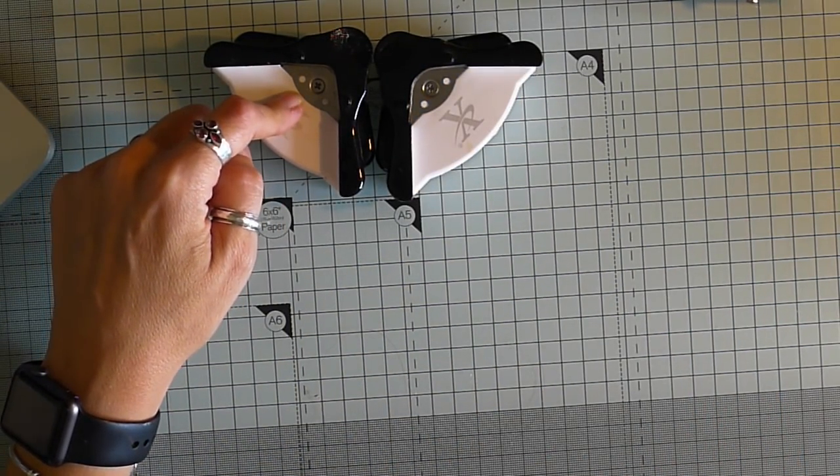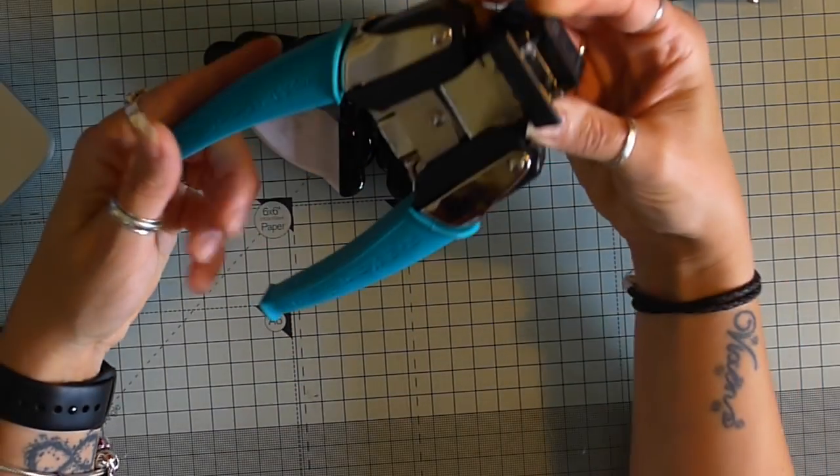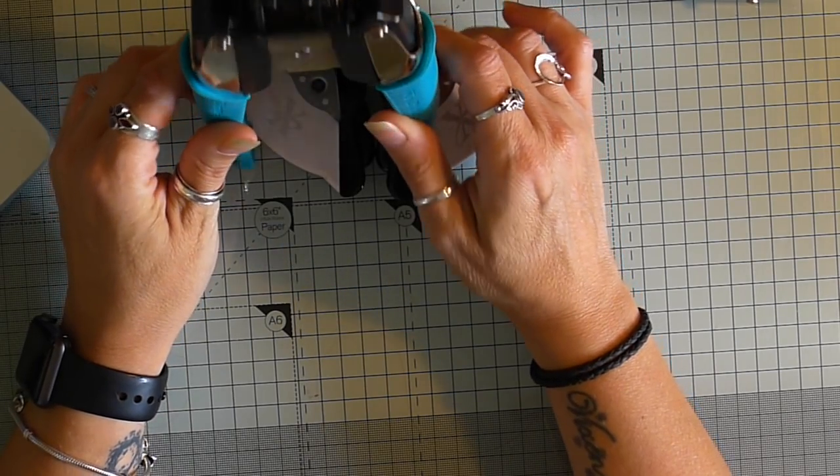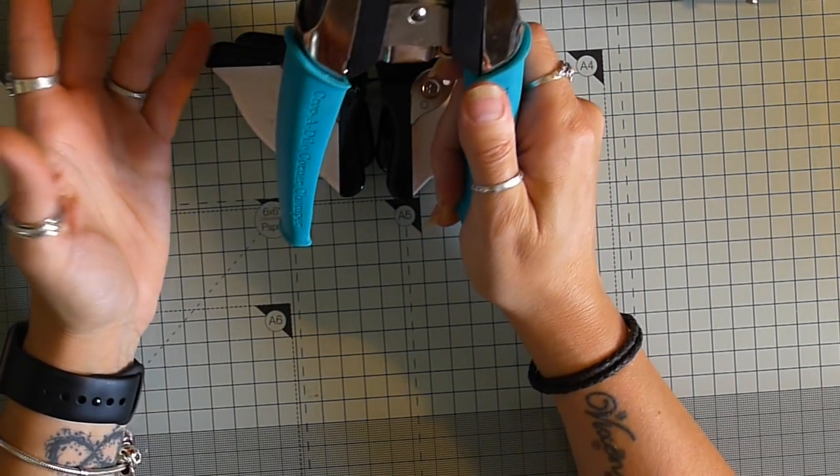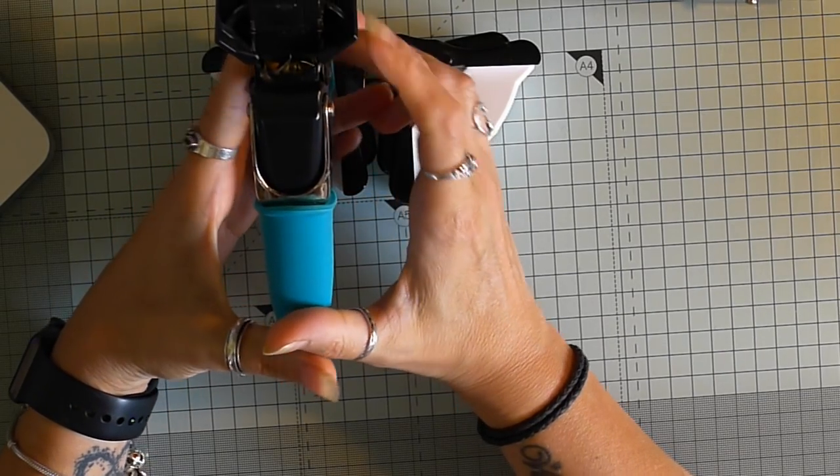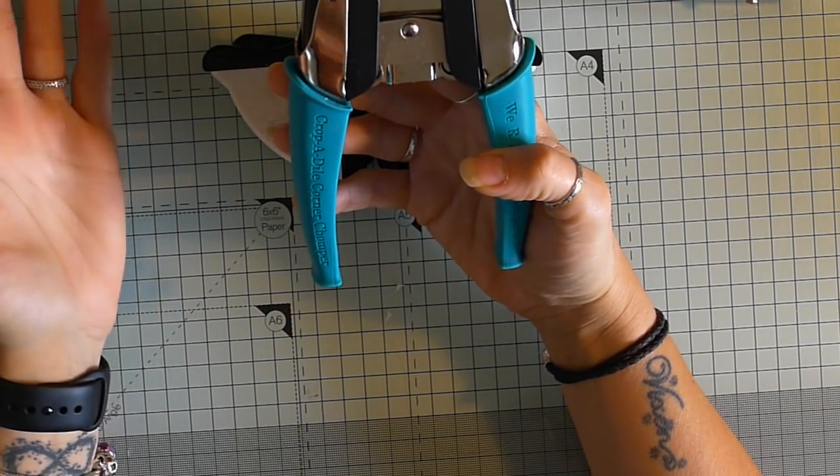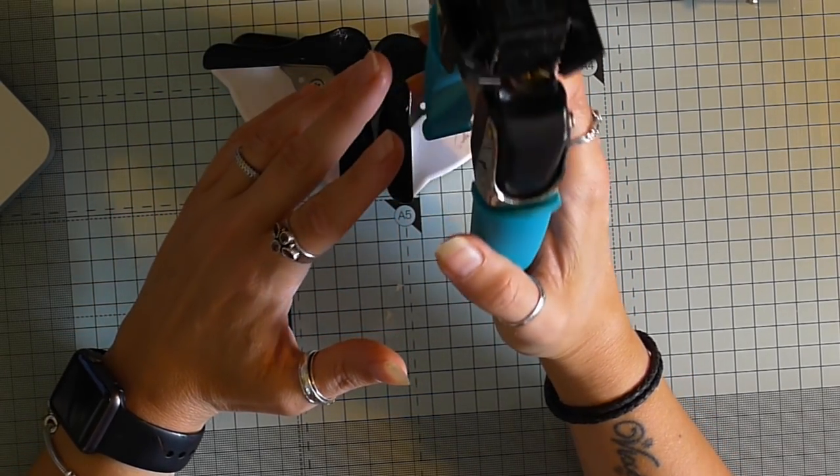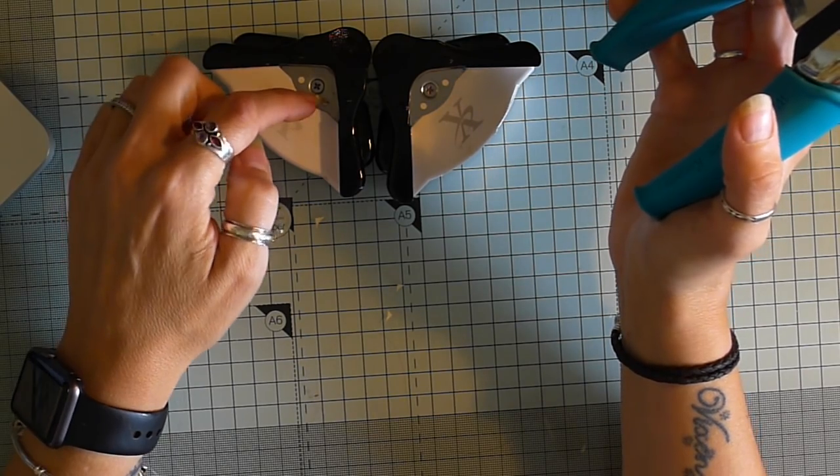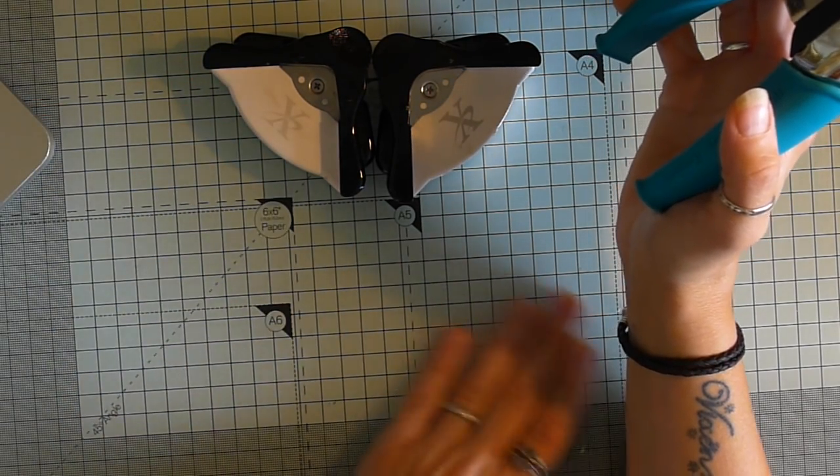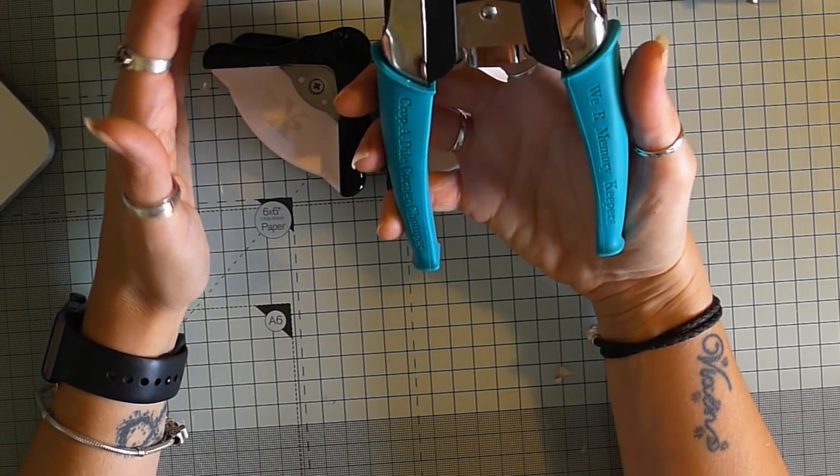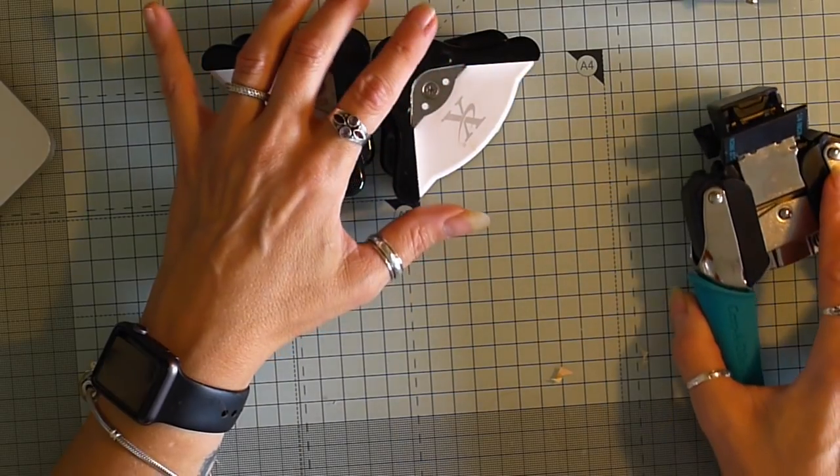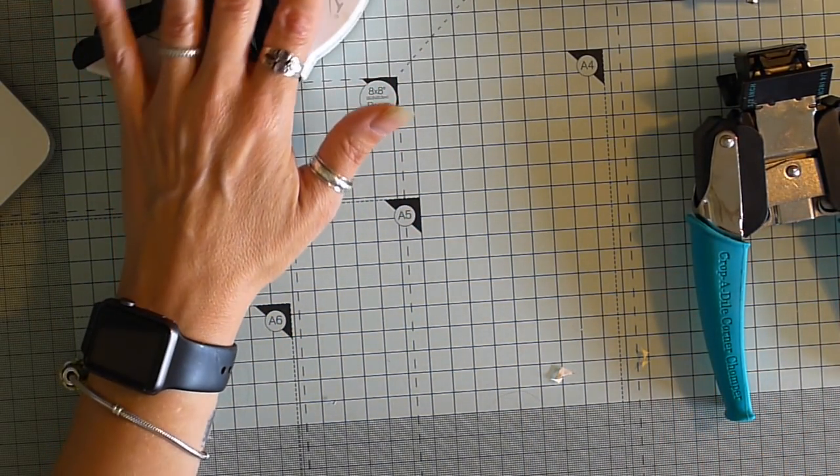I also have the Cropodile corner chomper. I can't lie, I think it's pants. It doesn't cut a very smooth corner. When I've mentioned in videos, lots of you have said the same thing. The only thing I would say about this is it goes through cardstock brilliantly where this struggles, and it doesn't even cut at all some of the really thick card. But as for a neat corner, I absolutely recommend the X-Cut corner chompers.